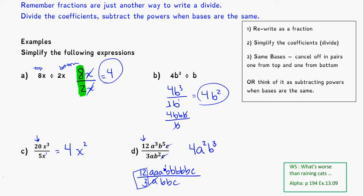Cancelling off 1 a off the top and 1 a off the bottom gets me 2 a's on top. Cancelling off in pairs, 2 b's off the bottom, 2 b's off the top leaves me with 3 b's. And cancelling off 1 c on top, 1 c on bottom leaves me with no c's at all. So there's my answer.